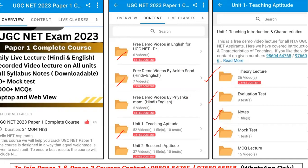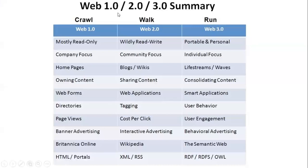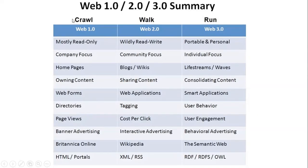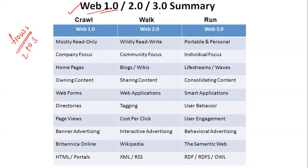Without wasting time, let's start with the topic — Web 1.0, 2.0, and 3.0. The understanding of Web 1.0 to 3.0 gives us an idea of how technology has flowed in the past two to three decades and how we have moved from 1.0 to 3.0. You can see that 1.0 is crawling, 2.0 is walking, and 3.0 is in the stage of running.